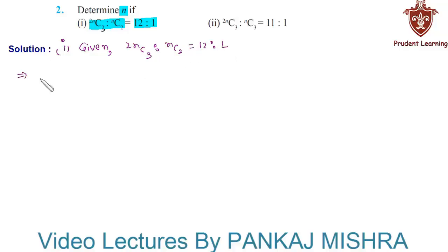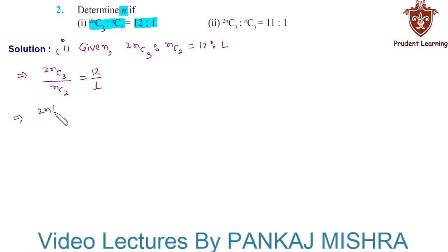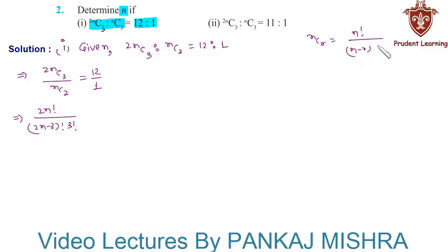This can also be written as 2nC3 over nC2 is equal to 12 over 1. Now the numerator on the left hand side can be written as 2n factorial over (2n minus 3) factorial into 3 factorial, using the relation nCr is equal to n factorial over (n minus r) factorial into r factorial. The denominator can be written as n factorial over (n minus 2) factorial into 2 factorial.